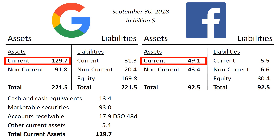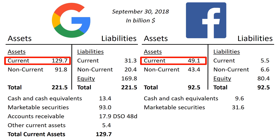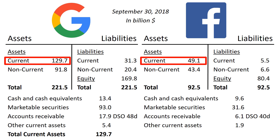For Facebook: cash and cash equivalents $9.6 billion, marketable securities $31.6 billion, accounts receivable $6.1 billion, which is equivalent to 40 days of day sales outstanding if you relate it to Facebook's Q3 revenue, other current assets $1.9 billion, to get to total current assets of $49.1 billion.